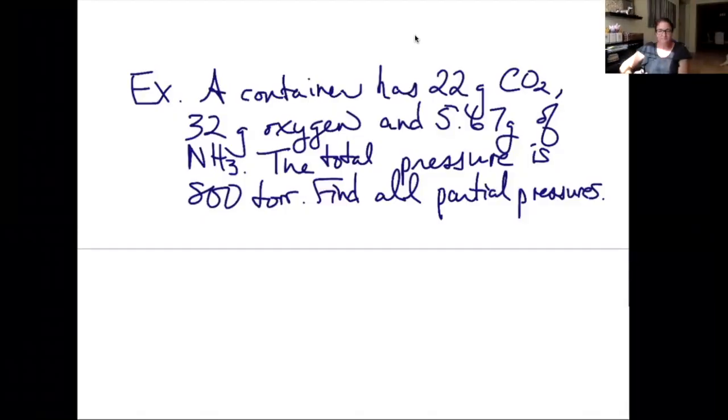Okay, for this problem here, we have 22 grams of CO2, 32 grams of oxygen, and 5.67 grams of NH3. Total pressure is 800 torr, we're going to find all partial pressures. Before I can find each partial pressure, I'm going to need to find the mole fraction of each, which means I need to find the moles of each.